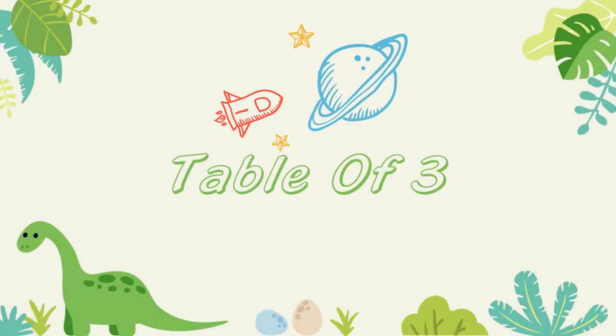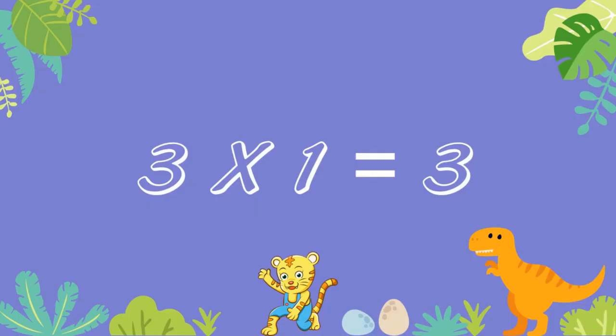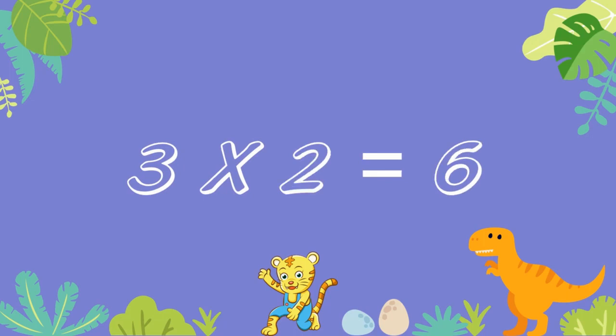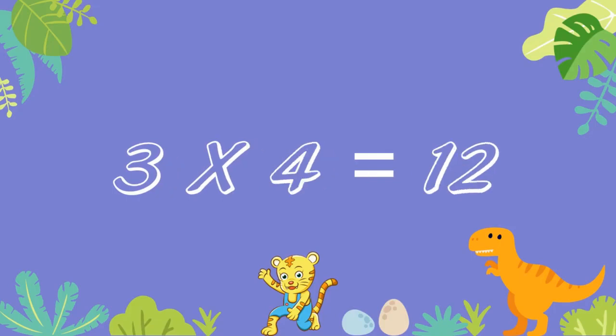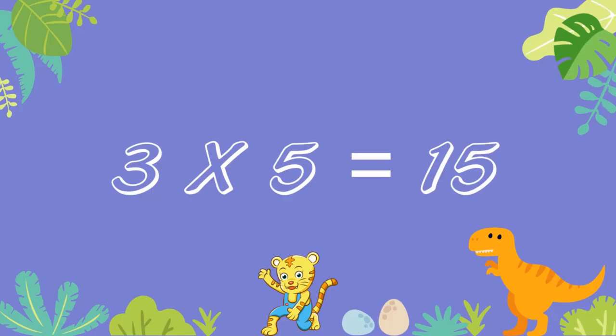Table of 3. 3 ones are 3. 3 twos are 6. 3 threes are 9. 3 fours are 12.